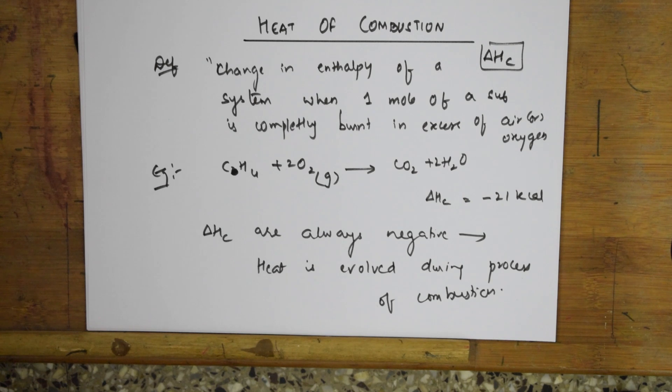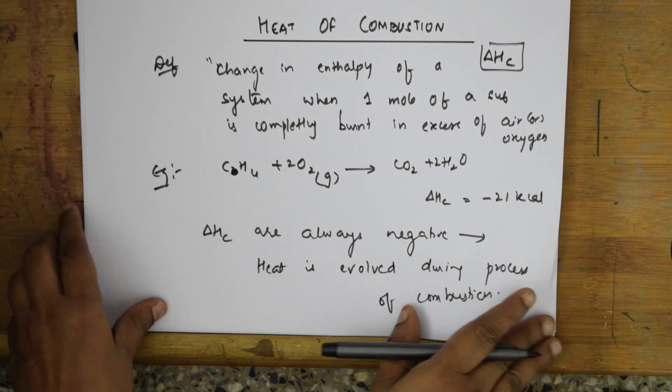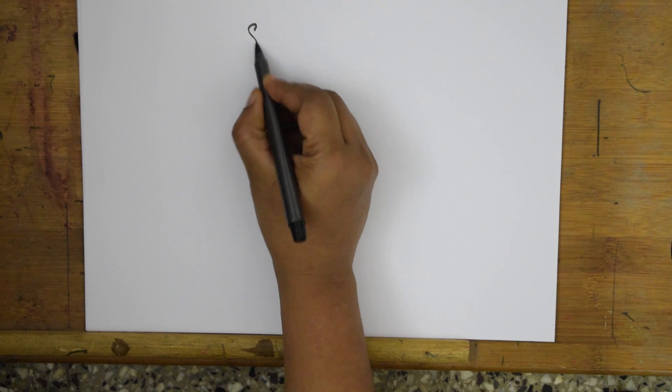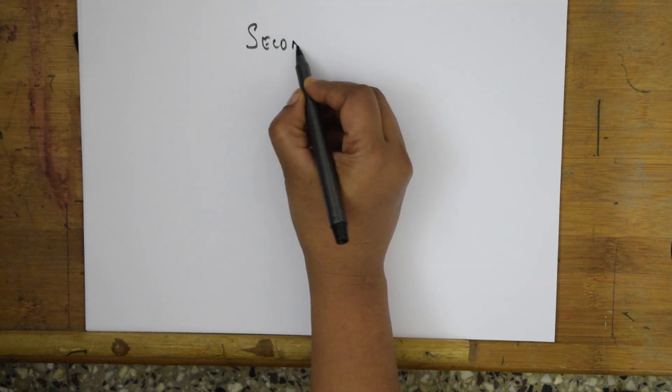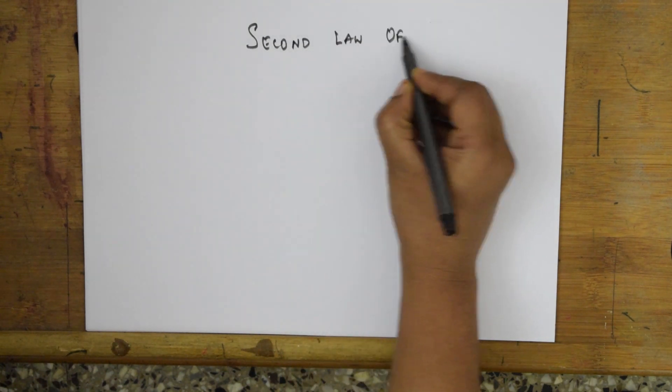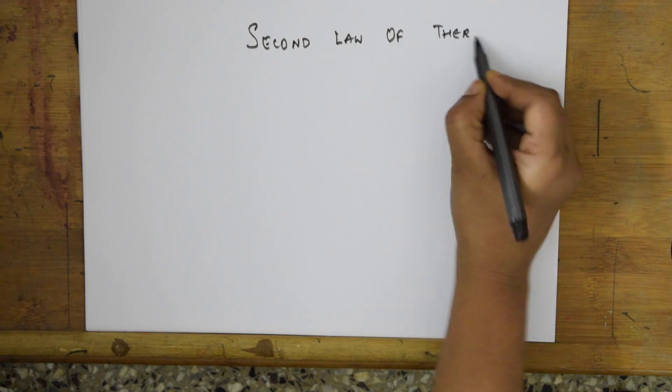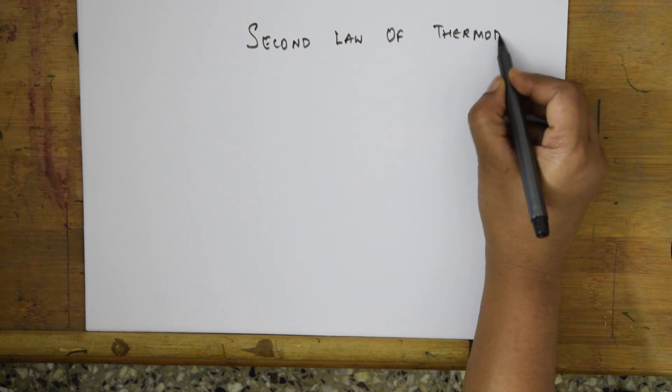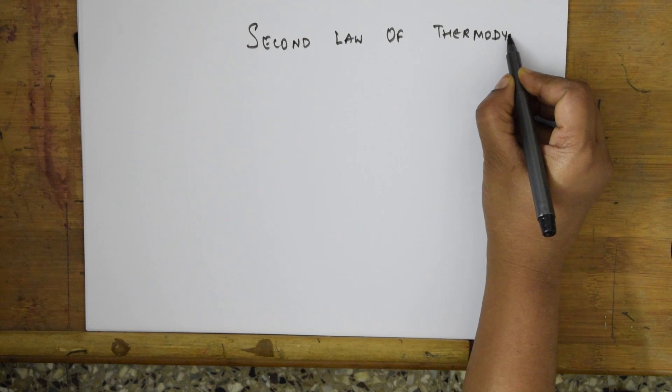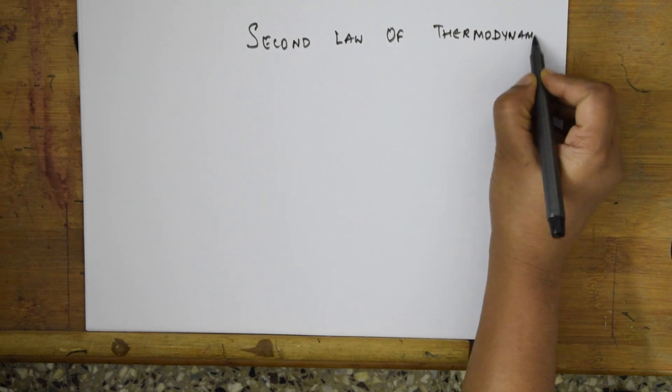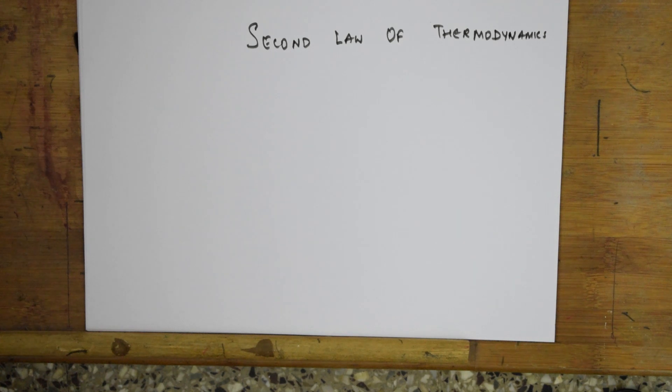I have covered all the examples students. Hope the concept is clear. Let's come back and start with the next important concept which is there for you all. That is the most important concept of thermodynamics - the second law of thermodynamics. Let's start with this topic.